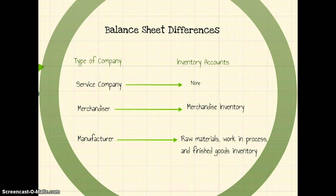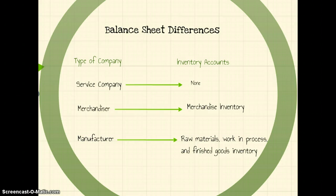Finally, let's look at the differences between balance sheets of the three types of companies. A service company has no inventory accounts. A merchandiser has one inventory account — merchandise inventory. A manufacturer has three inventory accounts: raw materials, work in process, and finished goods inventory. Be sure to know the differences and similarities between financial statements of all three company types, the components in each T-account, the flow of data through a manufacturer's inventory, and how to calculate cost of goods sold — as these could all be exam or quiz questions.